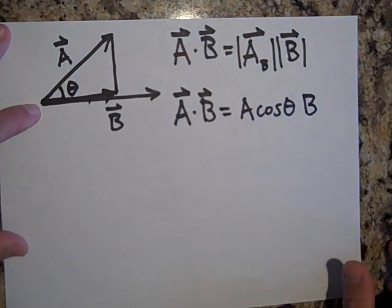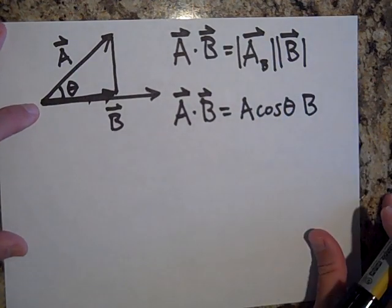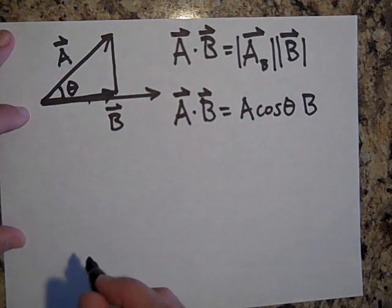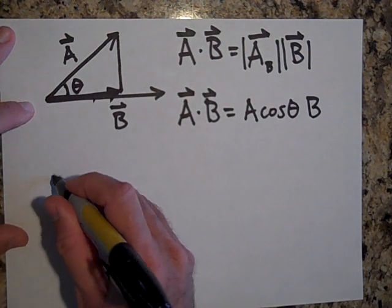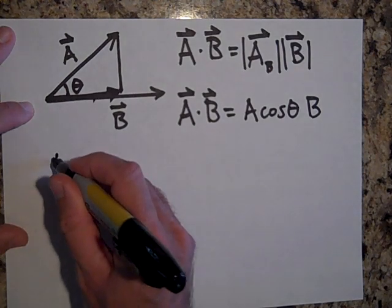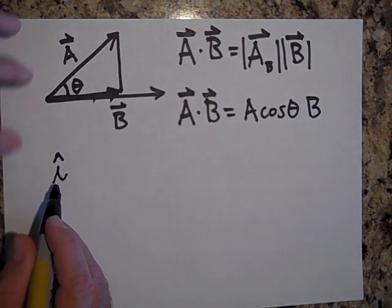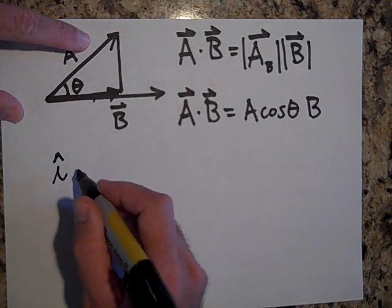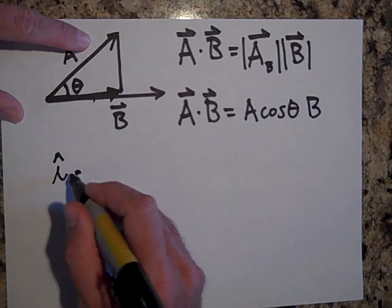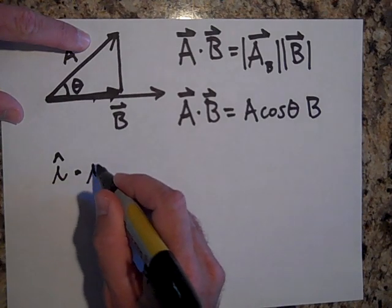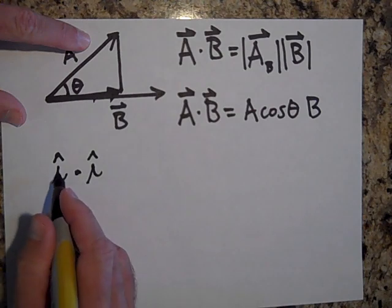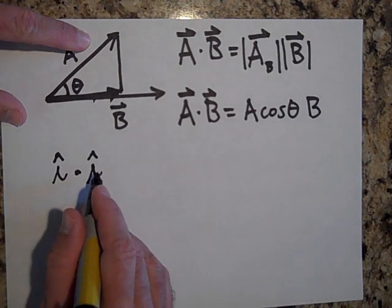Now if you understand that, then you know that when I multiply a vector, i is a unit vector, it's got a magnitude of one and it's in the positive x direction. So when I dot that, when I multiply that with the dot product into that, i dot i, how much of this is in the direction of that?